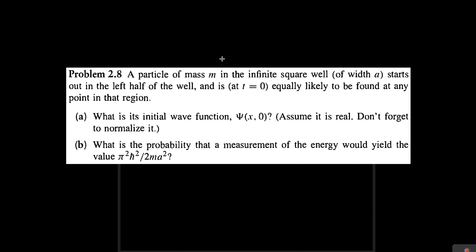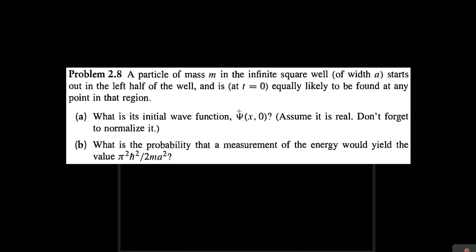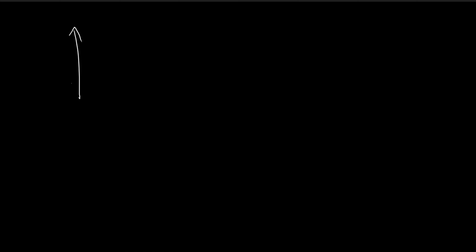In this question, we're told that the initial wave function starts off in a state where you're equally likely to find the particle anywhere in the left half of the well. So first of all, we need to find the initial wave function. Let's draw a diagram to visualize what exactly the wave function would look like.